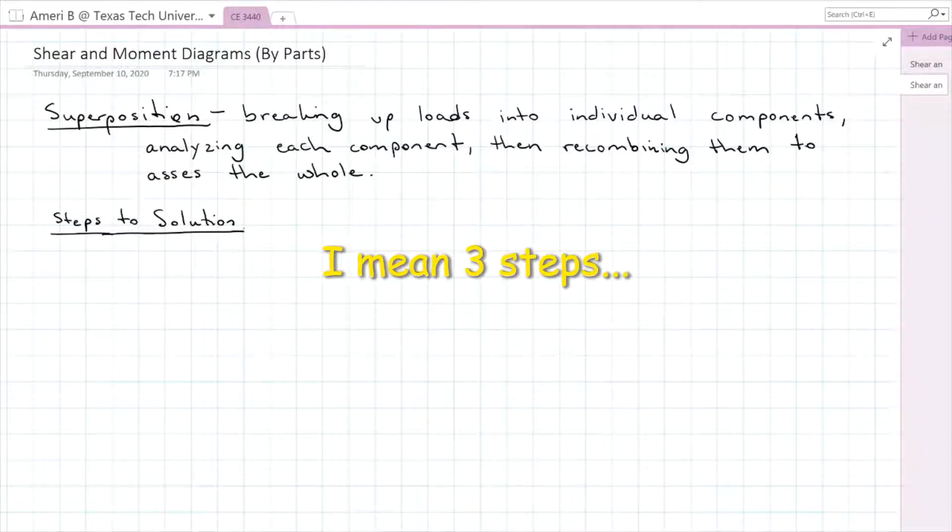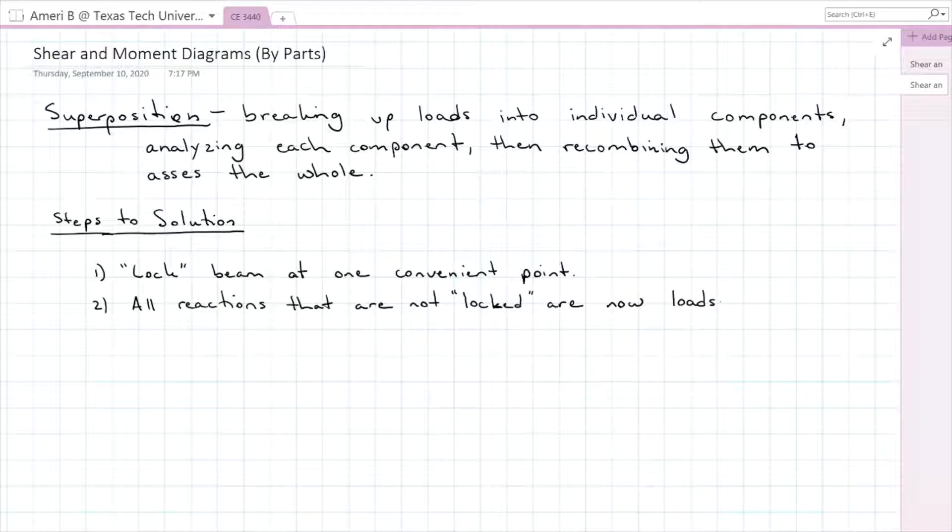There are two steps for solving shear and moment diagrams by parts or by superposition. First is to lock the beam at one convenient point or fix the beam at one convenient point to make everything a cantilever. All reactions that are not locked are now loads. And now that we've got it locked, all the reactions are turned into loads, we're going to draw an individual moment diagram for each load.